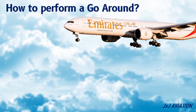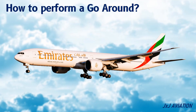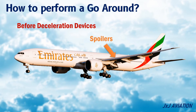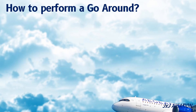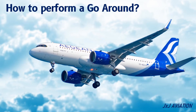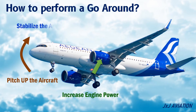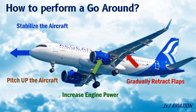How to perform a go-around? A go-around should always be performed before any deceleration devices such as spoilers, brakes, and reversers are activated. To perform a go-around, the following actions are taken: increase engine power, pitch up the aircraft, stabilize the aircraft, gradually retract flaps, and adjust the pitch and speed as required.